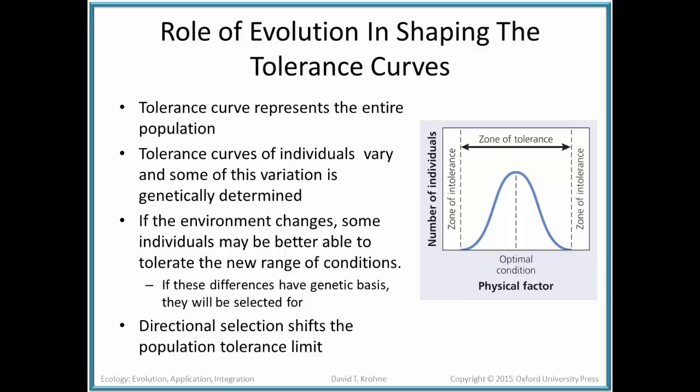In the case of directional selection, this bell-shaped curve would move to the left or to the right depending on the physical characteristic and how that had changed in the environment. Tolerance curves and tolerance ranges are influenced by the environment and will change and adapt based upon selective forces within that population.